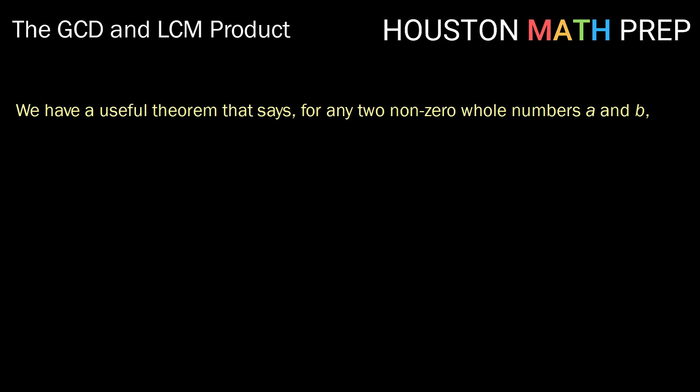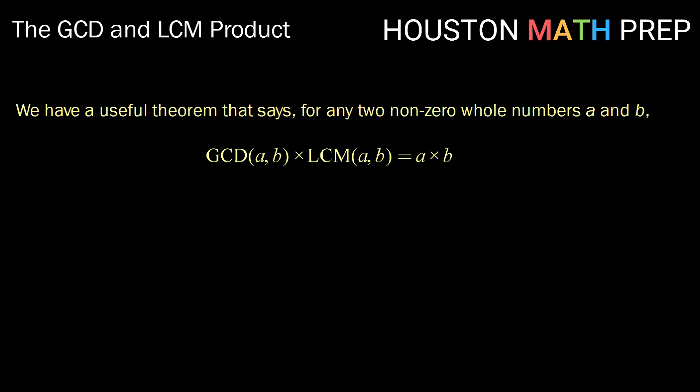We have this useful theorem that shows us that for any two non-zero whole numbers a and b, the GCD of a and b times the LCM of a and b should be equal to the product of a and b. This can be super useful if we know either the GCD of the two numbers and want to know the LCM or vice versa.